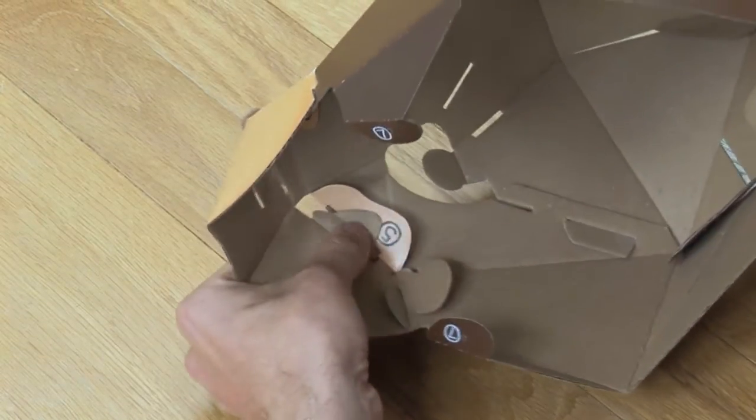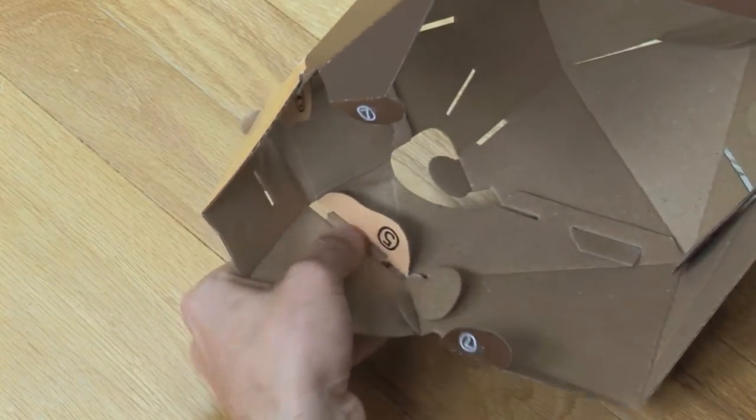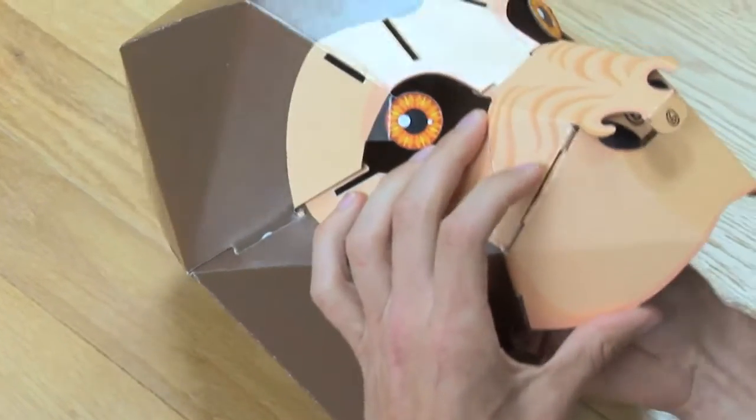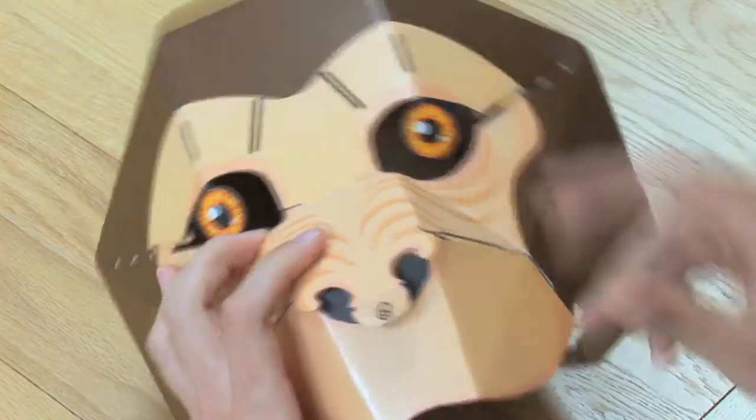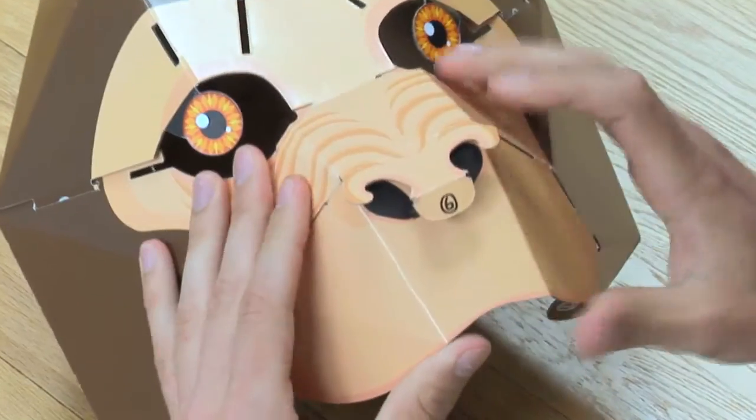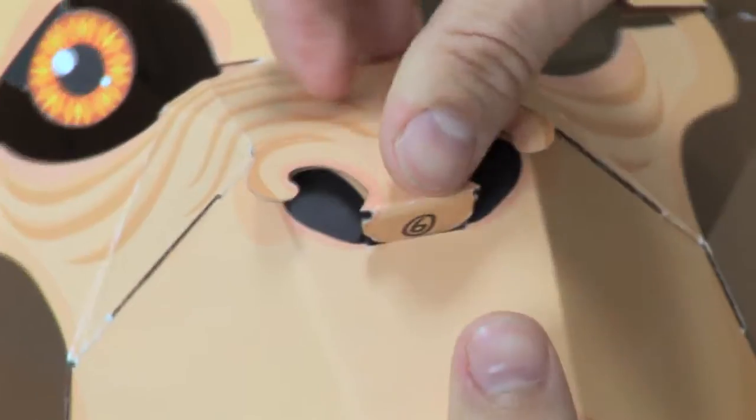On the inside, gently pull the upper lip away from the mask to ease tab 5 into its slot, then push them both all the way in. Insert tab 6 to create the nose.